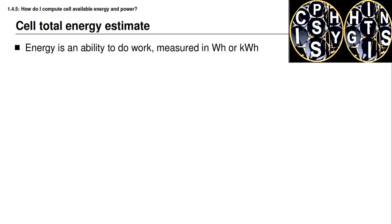We're continuing to look at requirement 3 for battery management systems, which has to do with performance management. Two of the estimates that must be produced by the battery management system are the amounts of energy presently stored in the battery pack and the amount of power available over the near-term future. We're going to start our analysis of these requirements by first considering how much energy is available in a single cell in a battery.